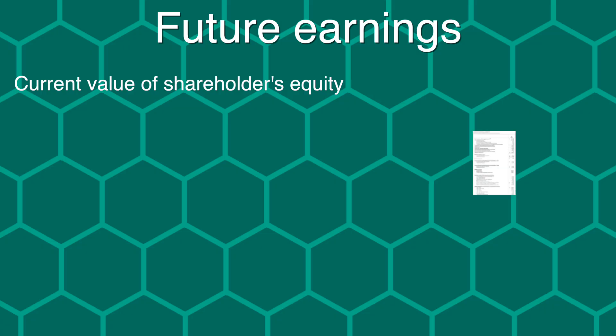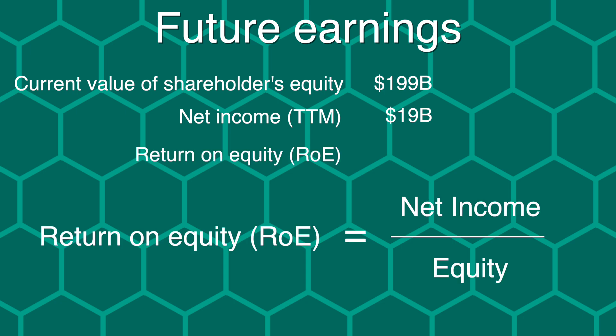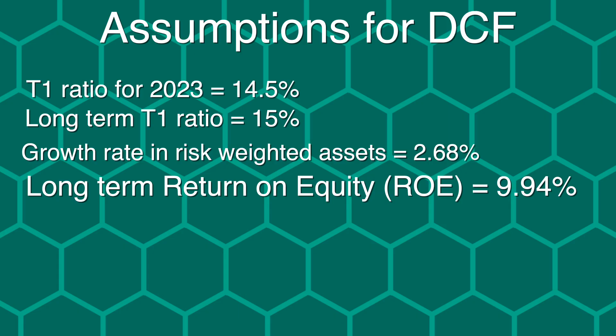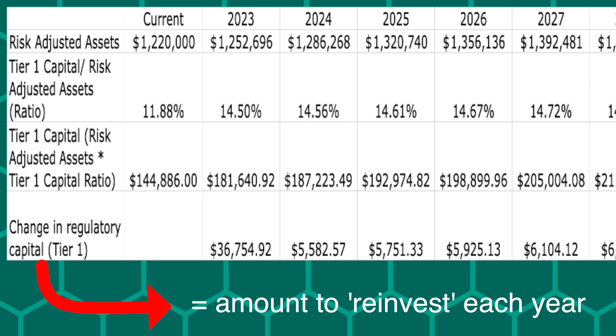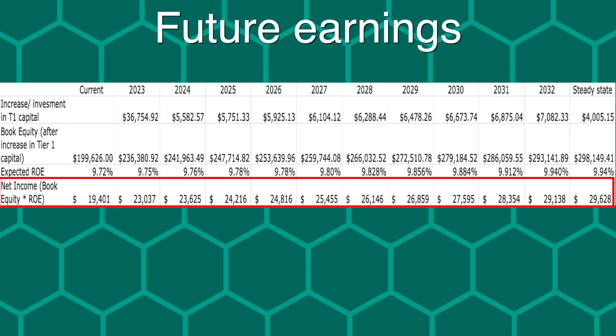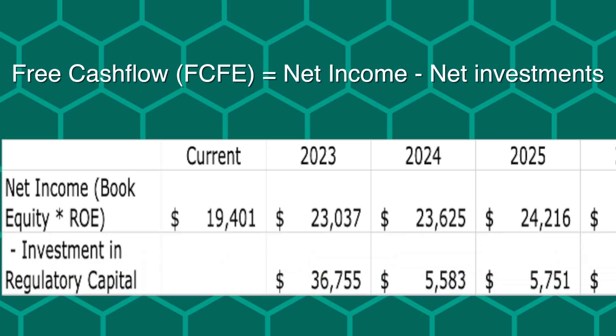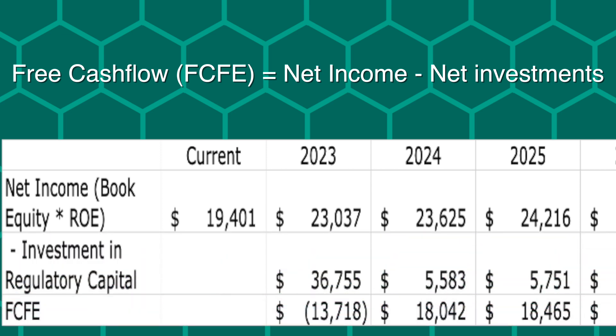As for estimating future earnings, the current value of common shareholders' equity is at $200 billion, whilst net income over the last 12 months has been $19 billion, giving a return on equity of 9.72%. For the next 10 years, I have assumed that Citigroup will improve their return on equity slightly to around 9.94%, which I'll explain later. Because we have already estimated how much Citigroup will need to increase equity by, we can use those values combined with the presumed return on equity to estimate net income for the next 10 years. Treating the increase in book equity each year as investments to maintain operations, we can estimate free cash flow by deducting net income by the amount spent on increasing book value.